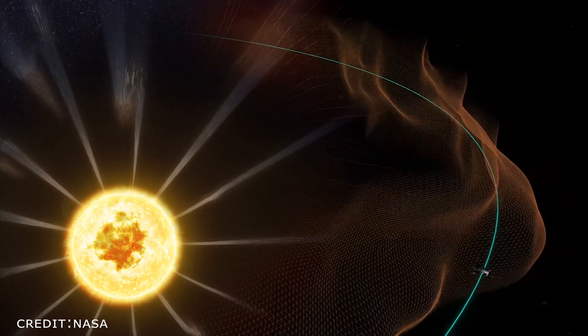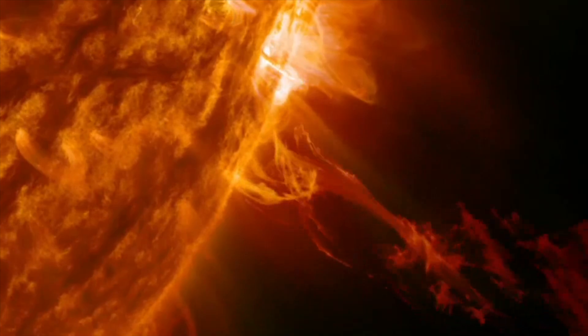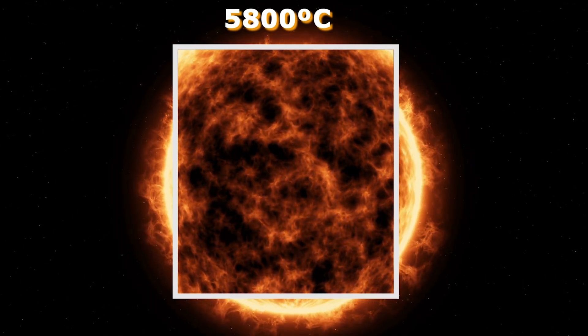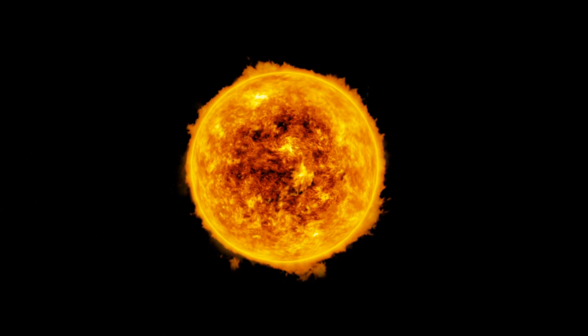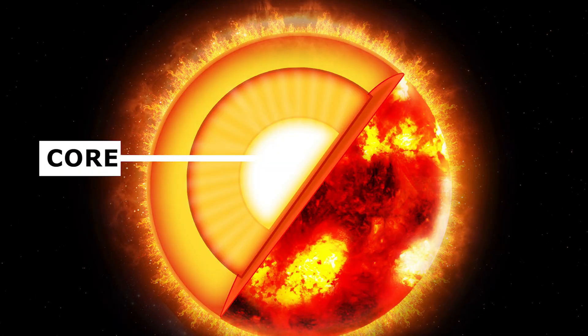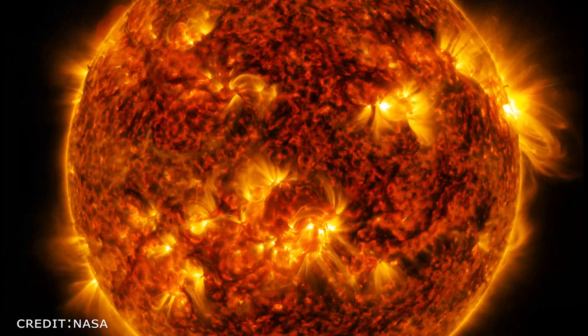Similarly, in the case of the sun, the scenario becomes much more complicated due to its size. Although the surface temperature of the sun is around 5,800 degrees Celsius, its atmosphere reaches up to 1 million degrees Celsius. This discrepancy can be explained by the fact that all the energy of the sun originates from its center, where nuclear fusion reactions take place.